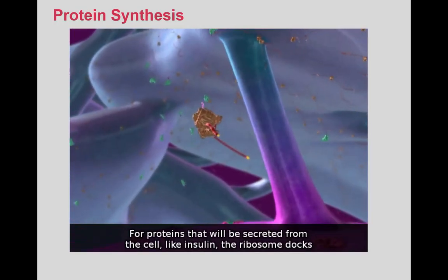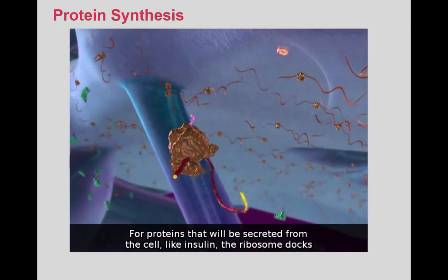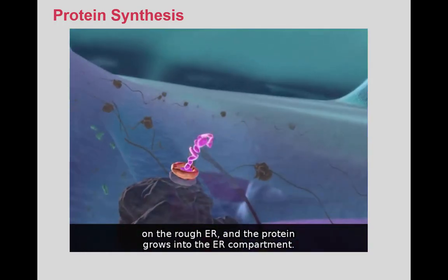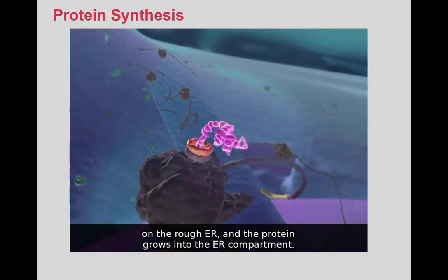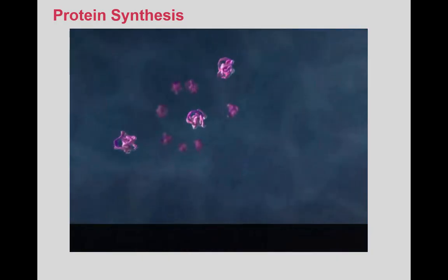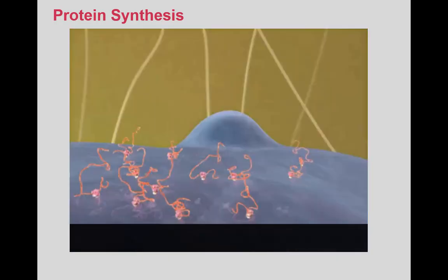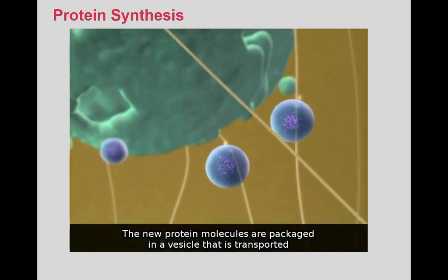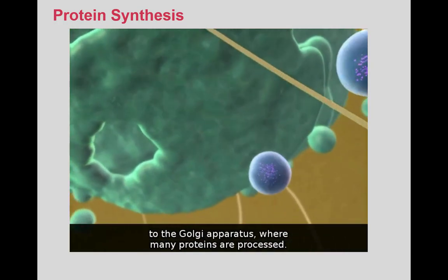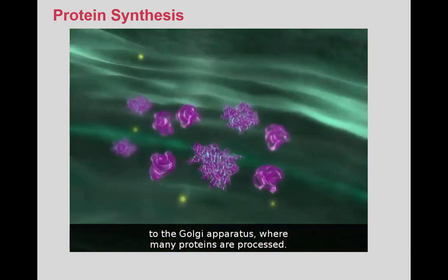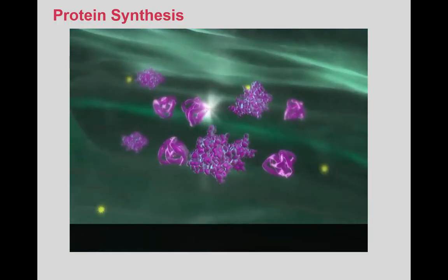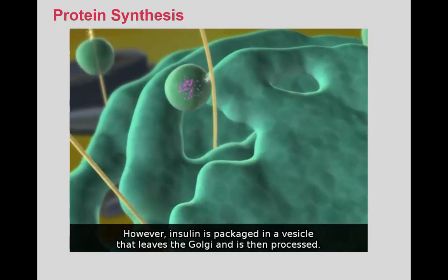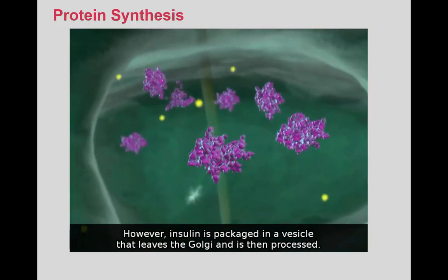For proteins that will be secreted from the cell, like insulin, the ribosome docks on the rough ER, and the protein grows into the ER compartment. The new protein molecules are packaged in a vesicle that is transported to the Golgi apparatus, where many proteins are processed. However, insulin is packaged in a vesicle that leaves the Golgi, and is then processed.